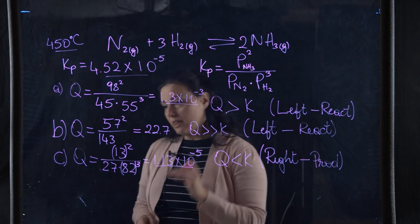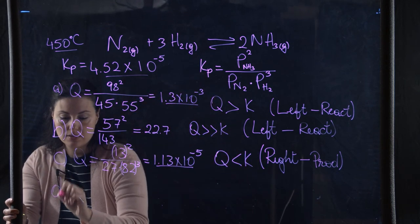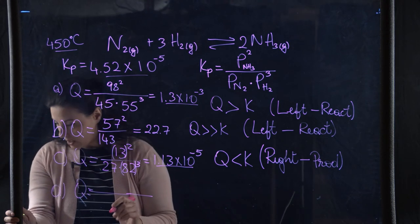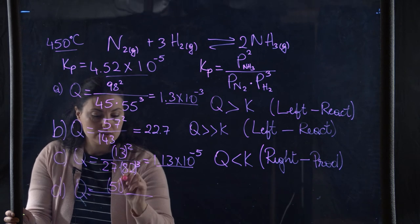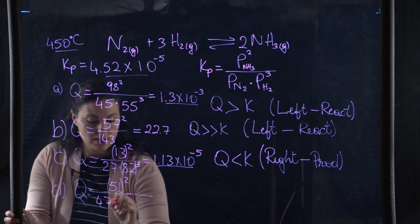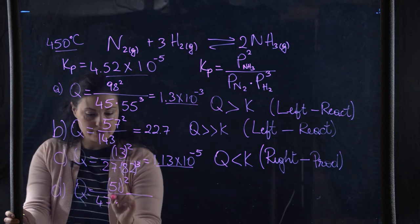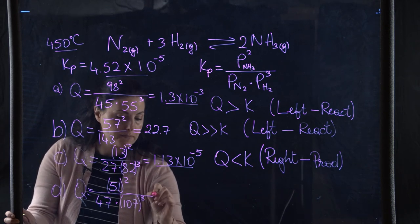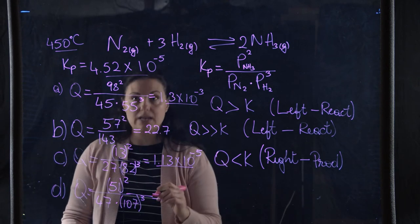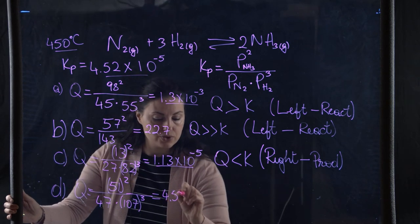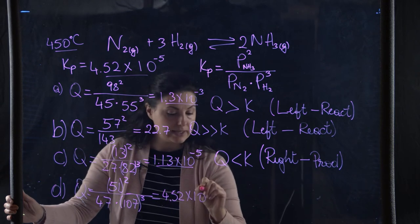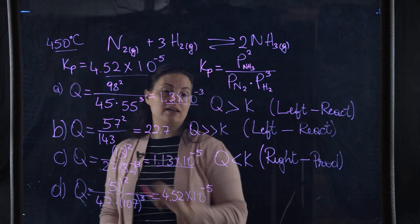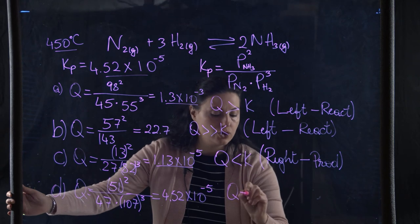For part D, Q equals (51)² divided by (47) × (107)³. This value comes out to be 4.52×10⁻⁵. Comparing to K, Q is exactly equal to K — so Q equals K.